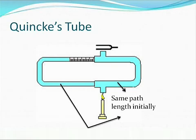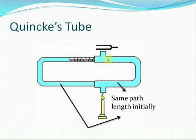We will study it here because it will help us explore the phenomenon of constructive interference in an even better way. The Quincke's tube consists of two U-tubes, one of which is slightly smaller than the other so that it fits inside the other.